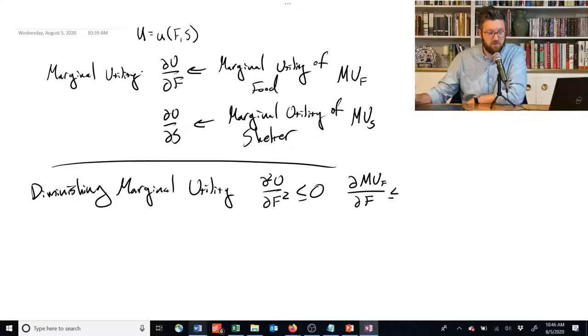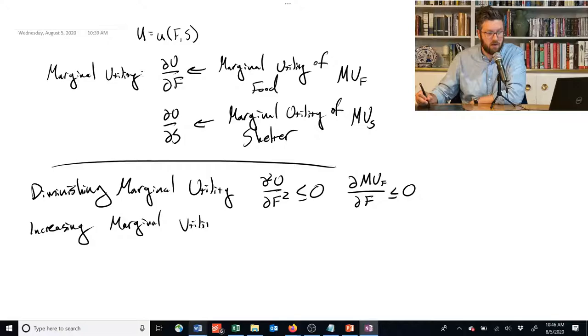Technically, I guess if it's diminishing, there shouldn't be an equal sign here, but we're going to mostly focus on diminishing versus you could technically have increasing marginal utility. And that would be that the second derivative of something is positive. Now, what does this all mean?